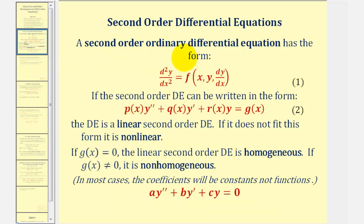A second order ordinary differential equation has the form given here, where we have the second derivative of y with respect to x is equal to a function in terms of x, the independent variable, y, the dependent variable, and the first derivative of y with respect to x.